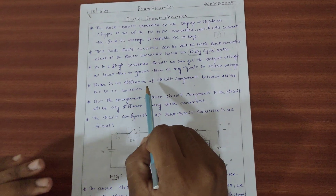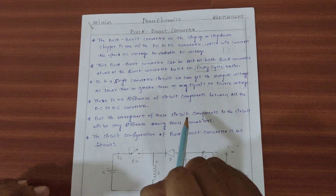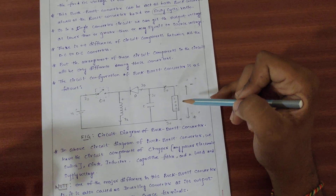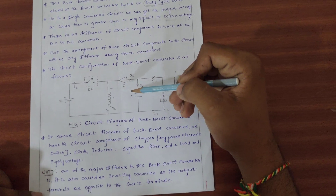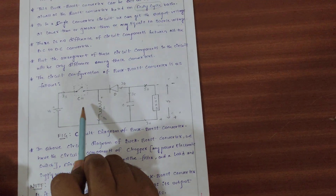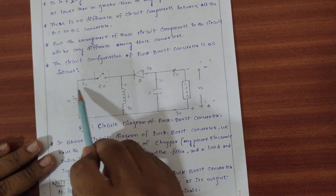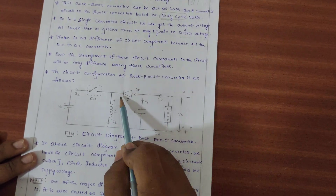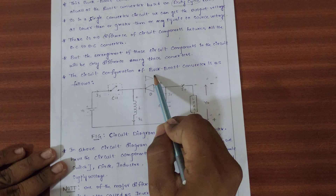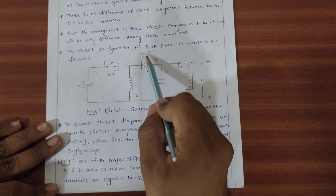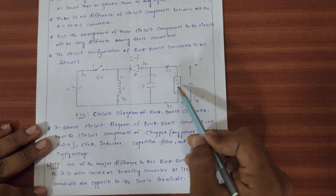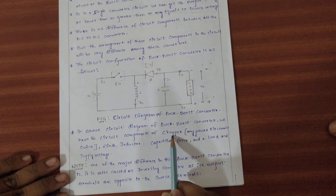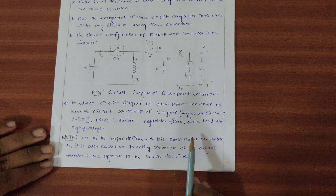Now talking about the buck-boost converter, we use circuit components and there is a difference in the positional alignment compared to the buck and boost converters. The circuit diagram of the buck-boost converter uses the following components: chopper, diode, inductor, capacitor, and load. We reverse the diode direction and connect the capacitor in the opposite direction.